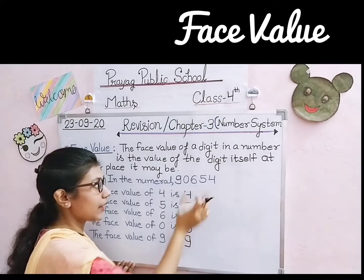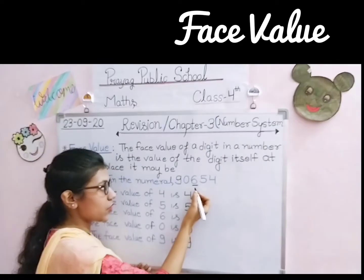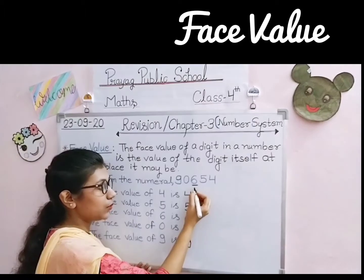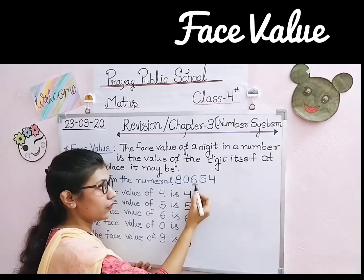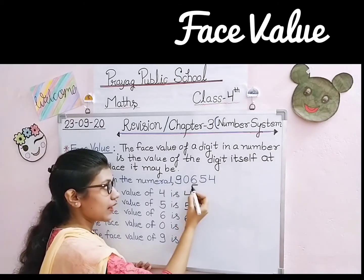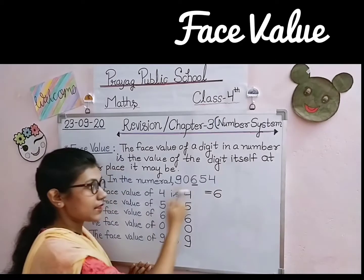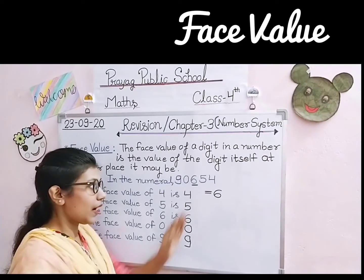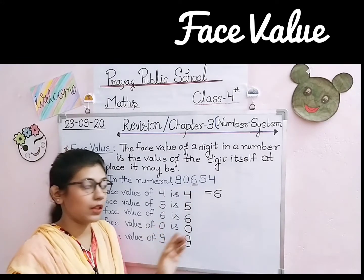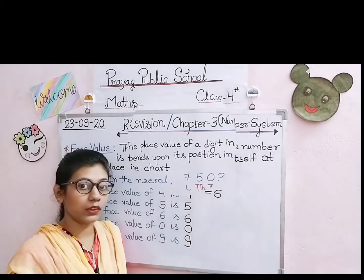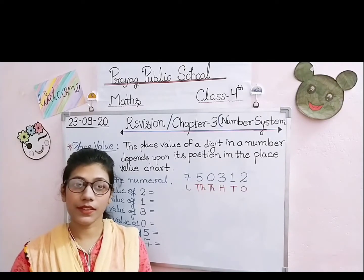तो हमें place value और face value में confused नहीं होना है। Face value वो digit itself होता है, चाहे वो किसी भी place पर हो। अगर कोई भी number given हो और किसी digit को underline किया जाए और पूछा जाए write the face value of the underlined digit, तो आप सिर्फ उस digit की face value लिखो। जैसे इस number में 6 को underline किया गया है, तो 6 की face value 6 होगी। तो face value के बारे में: किसी भी digit की face value वो digit itself होता है।